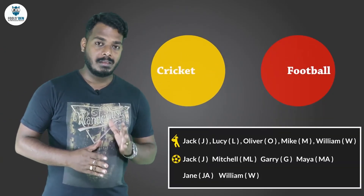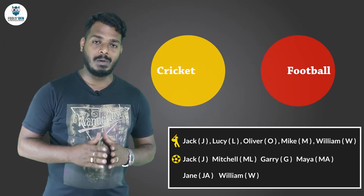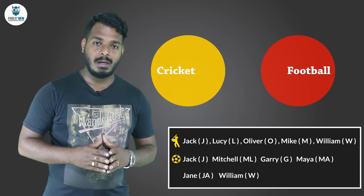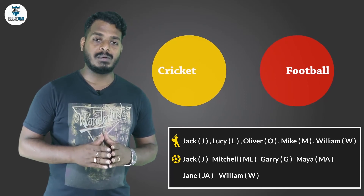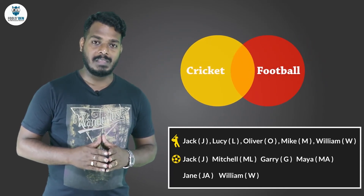He thought that if this question could puzzle him, the same would happen with other people. So why not put this concept in the form of a picture or diagram, which makes things easier for people? This is what he did — he took two circles: the first circle represents those students who like cricket and the second represents those who like football.